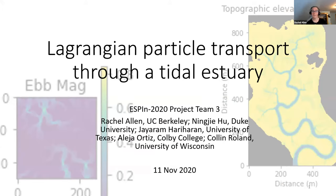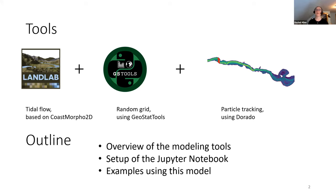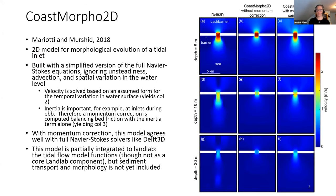We were project team three, working on Lagrangian particle transport through a tidal estuary. We used three different tools: first, a tidal flow component built in LandLab based on a CoastMorpho2D model; second, a random grid generator called GSTools; and third, a particle tracking component called Dorado, which my teammate Jay actually wrote. I'll cover an overview of these modeling tools, walk through the Jupyter notebook we set up, and show examples of things you can test. The tidal flow component is based on a 2018 paper by Moriady and Marsheed — a 2D model for morphological evolution of a tidal inlet built with a simplified version of the full Navier-Stokes equations.